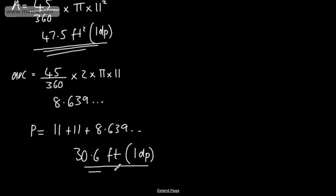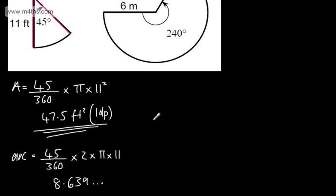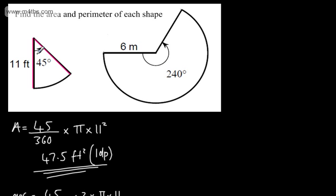For this next sector with 240 degrees, we use 240/360 × πr² for the area, and 240/360 × 2πr for the arc length.